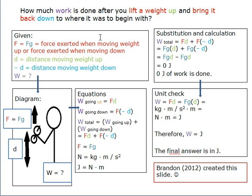However, when you bring the weights back down, you still exert a force equal to Fg, yet the distance the weights travel is d moving down, therefore the distance moving weight down is represented by negative d.